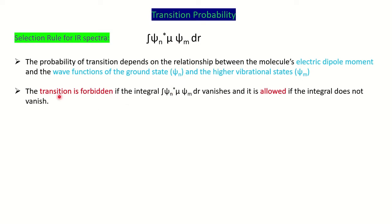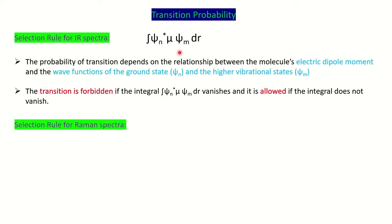If this integral vanishes — meaning if this integration gives you zero — then the transition is forbidden. If it gives you a non-zero value, then it is an allowed transition. So basically, for an allowed transition the integration value should be non-zero.